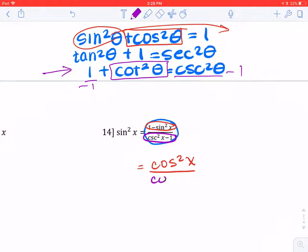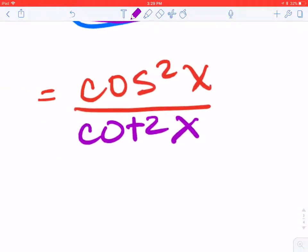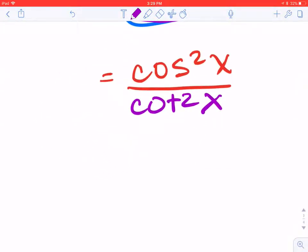So now I can substitute cosecant squared minus 1 with cotangent squared. Now I'm working with cosine squared divided by cotangent squared.